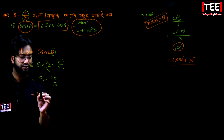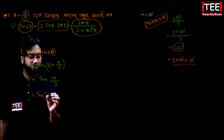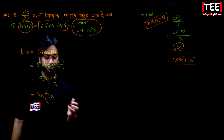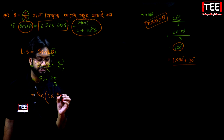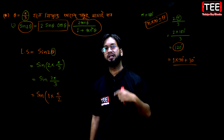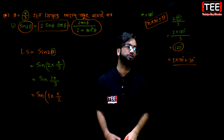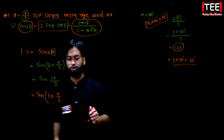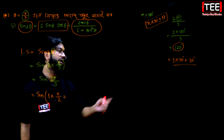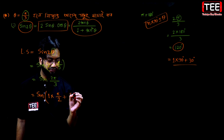Sin — first of all, you can write 1. So 1 into 90 degrees is 90 degrees. 90 degrees is π/2, because 180 degrees is π, so 90 degrees is π/2. This is π/2. So you can write plus 30 degrees is π/6.